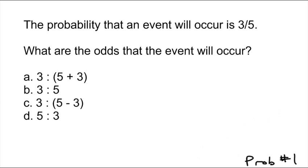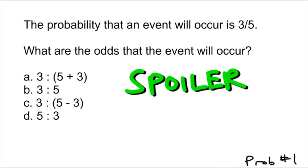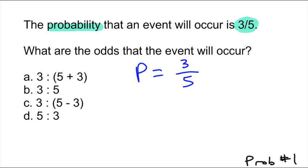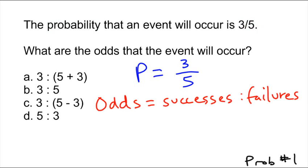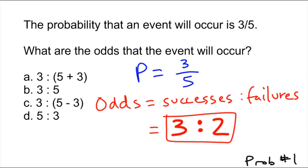Question 1: The probability that an event will occur is 3 out of 5. What are the odds that the event will occur? The probability is 3 out of 5, and the odds are successes to failures, so it would be 3 to 2.